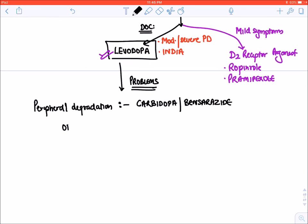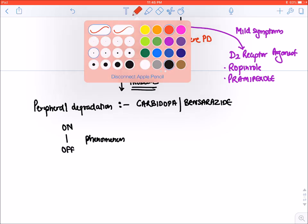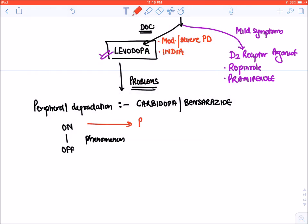Levodopa shows on-off phenomena. Now to prolong this on phase, to prolong this on phase, we give MAO-B inhibitor and COMT inhibitor.